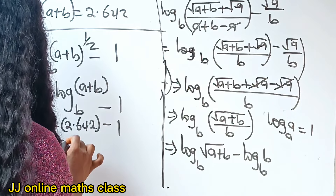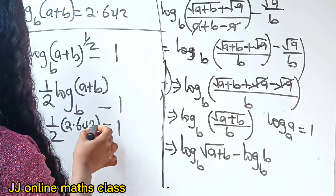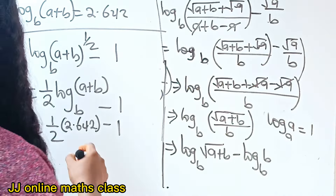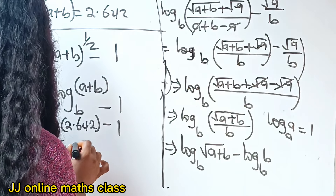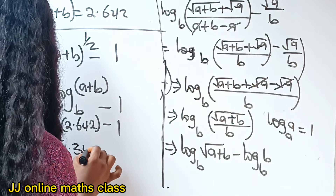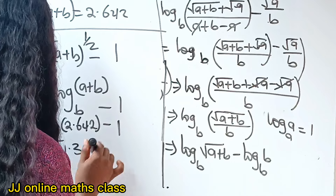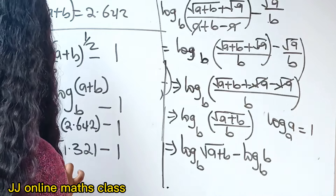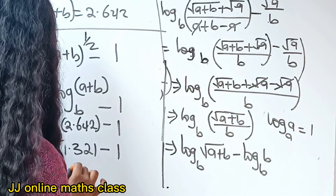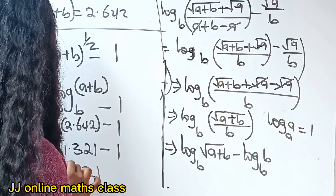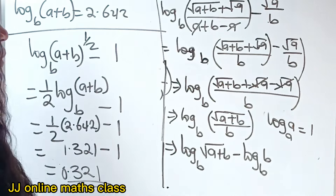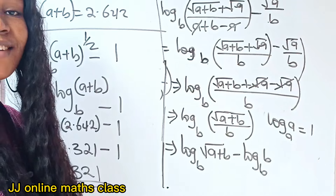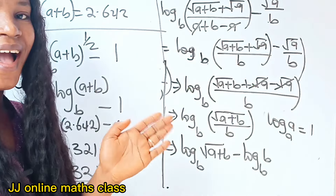This equals: when 2 divides 2.642 you get 1.321, minus 1. So the final answer is 0.321. Thank you so much for watching and have a lovely day. Bye.